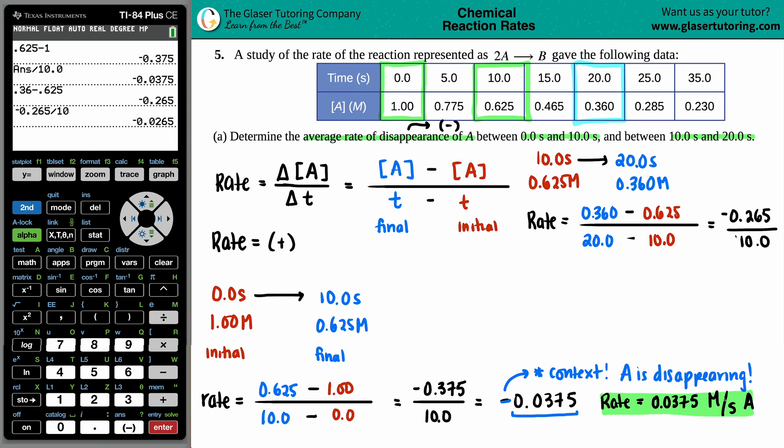The negative is the context - you got -0.0265 as your answer. A rate should always be positive, so it is decreasing by a rate of 0.0265. The actual rate is 0.0265 molarity per second of A, and that's the second answer.